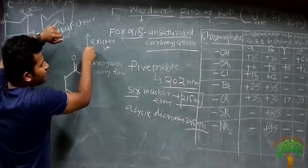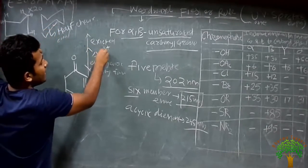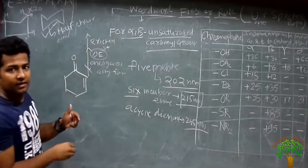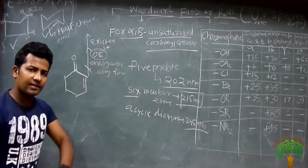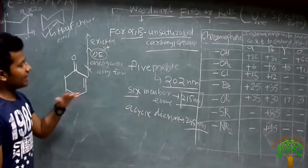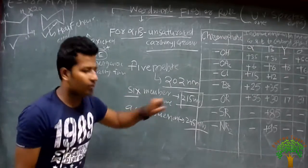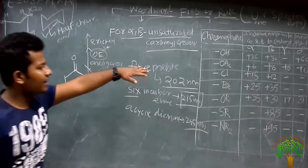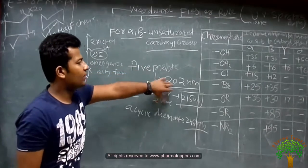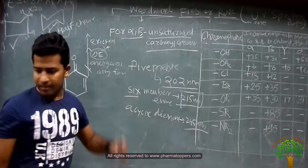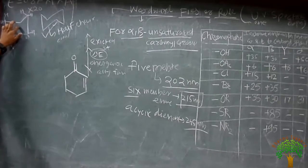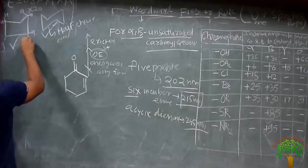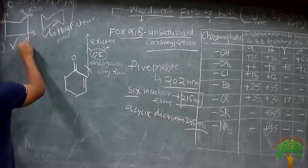As the energy gap between the excited and ground state decreases, lambda max increases. As energy decreases, lambda max increases. That's why the six-membered ring has 215 nanometers. In the case of the five-membered ring, there is the presence of the eclipsed conformation. In this conformation, two hydrogens are very close to each other.